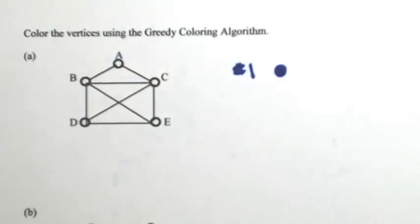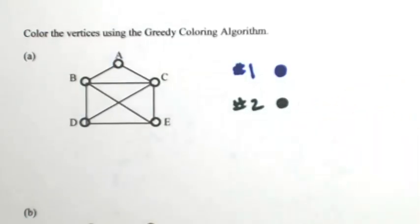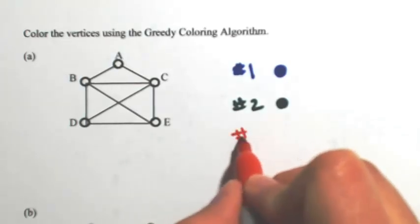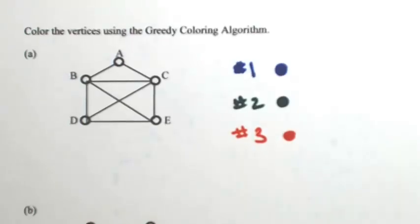Color number 2 is going to be green. Color number 3, let's say, is red. Then if we need it, let's say color number 4 is black.